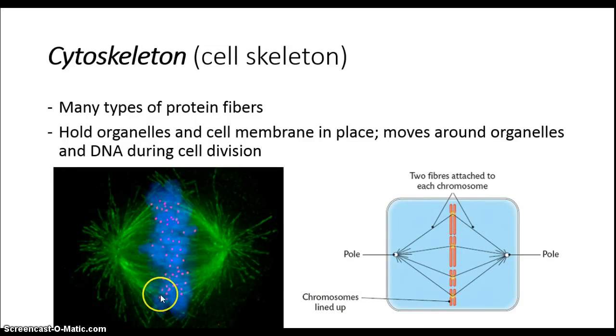Here, the DNA is shown in blue, with red spots in the center, and these green fibers are the cytoskeleton itself. What we're seeing here is all the chromosomes lined up in the middle of the cell, so they can be split in half and separated to opposite sides.